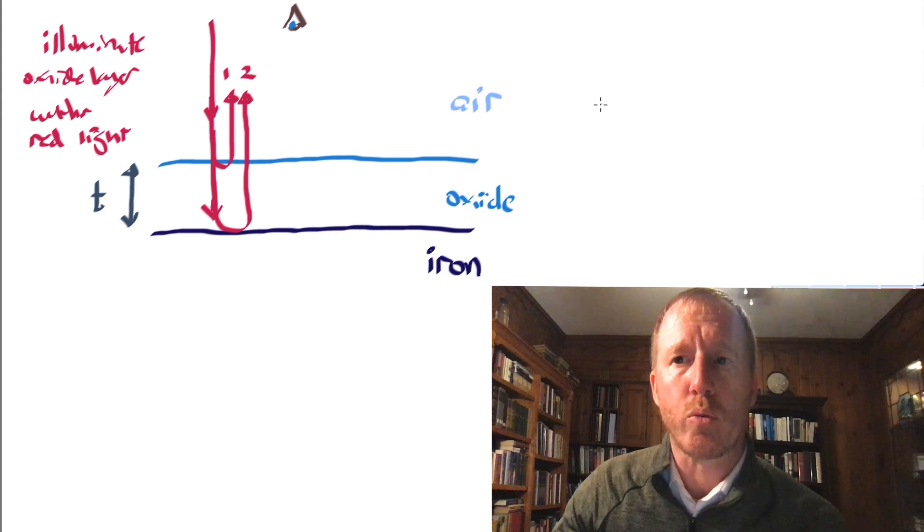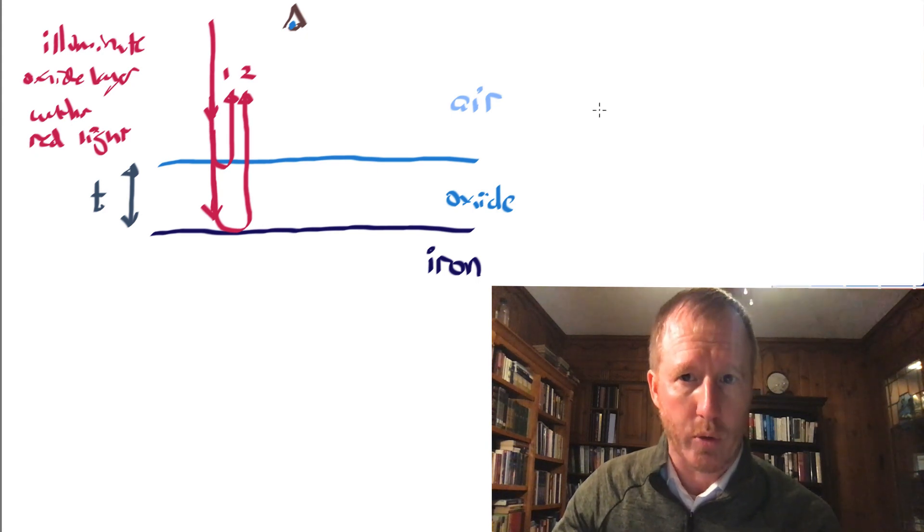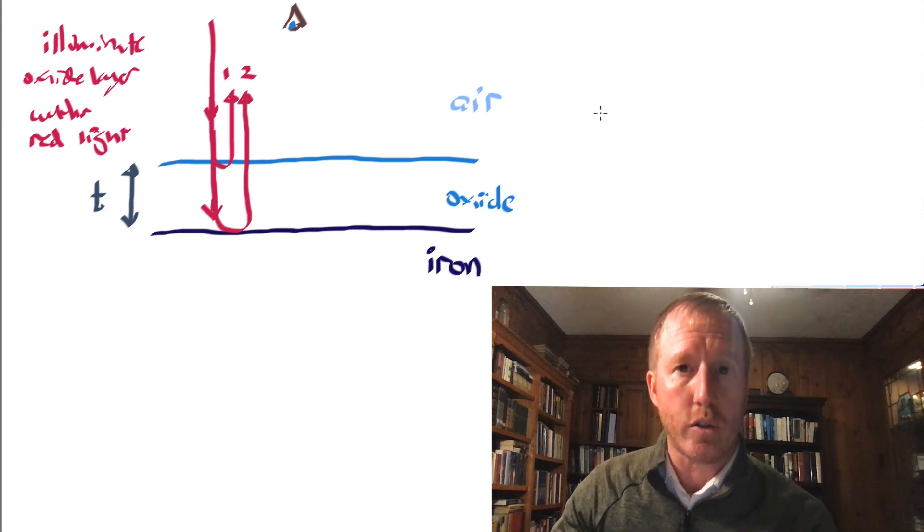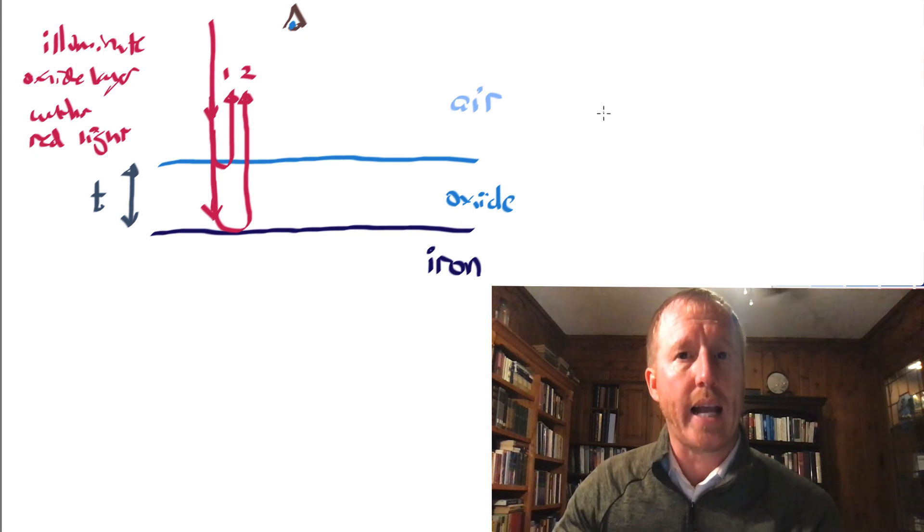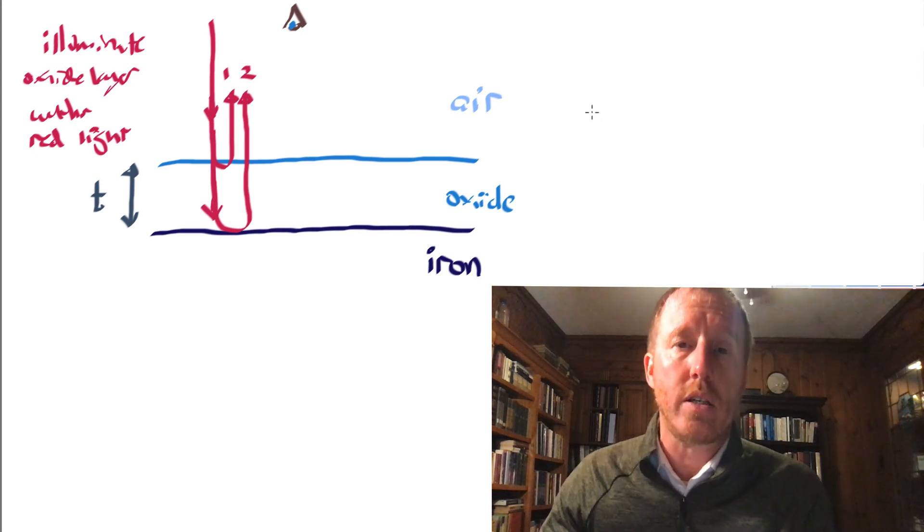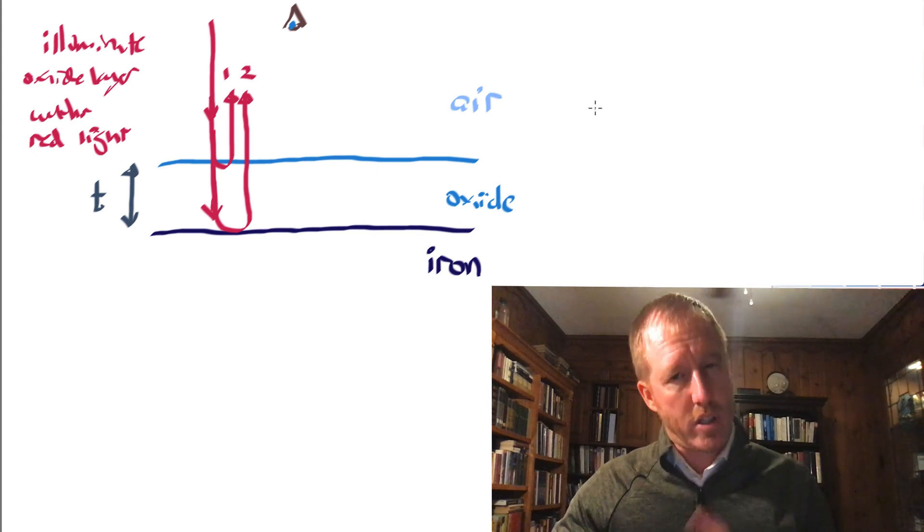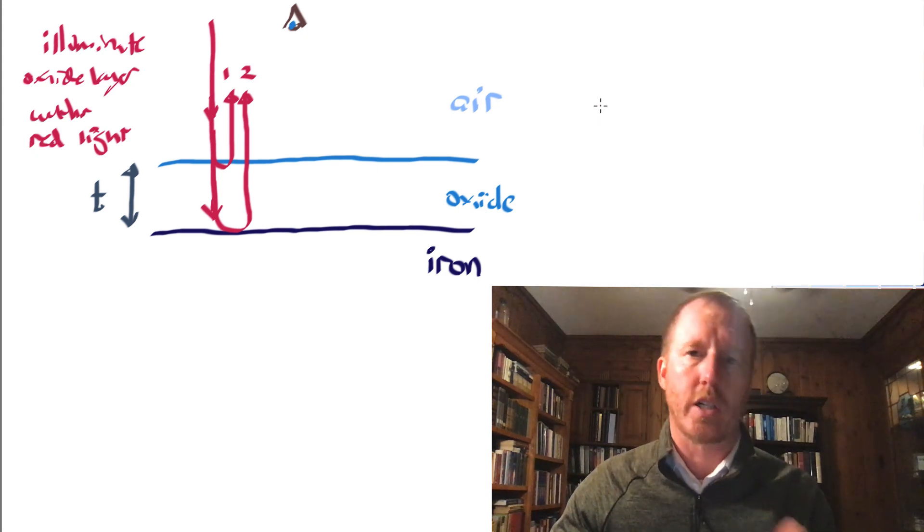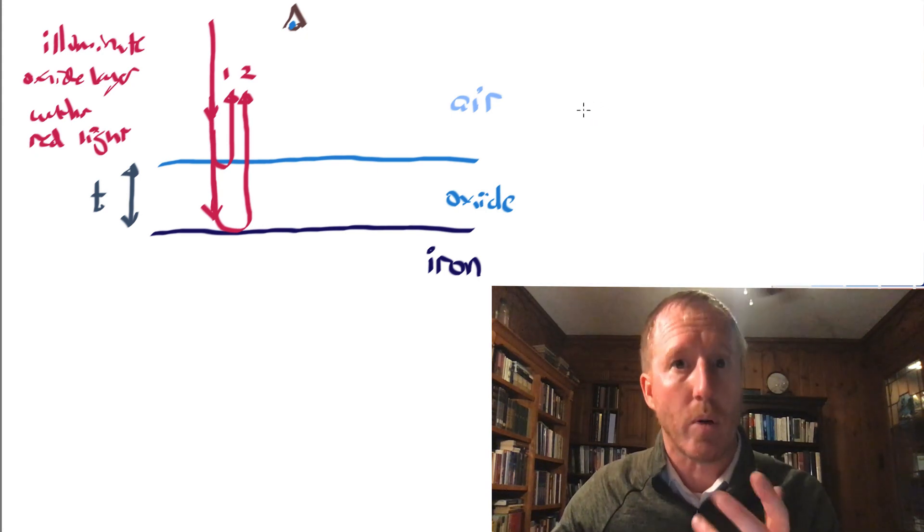And remember, if beams one and two are exactly in phase with one another, then they will be constructively interfering. If they're exactly out of phase with one another, they will be destructively interfering. And if they're somewhere in between, they will be neither constructively or destructively interfering.